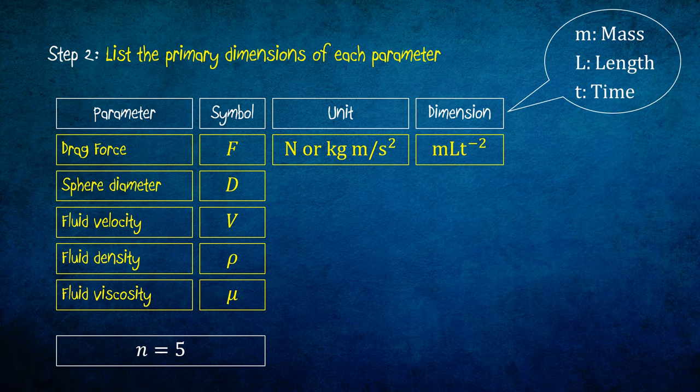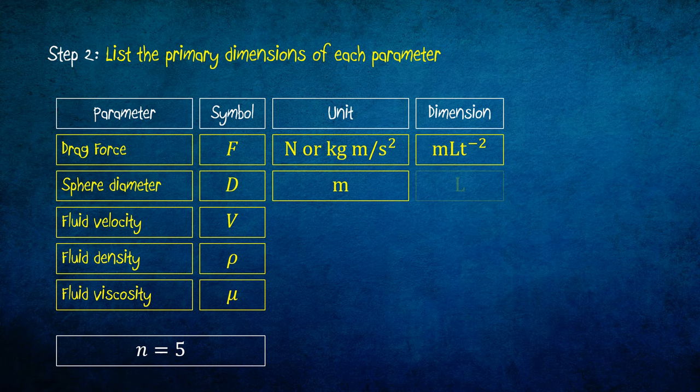The unit for diameter is meter, then its dimension is L. For fluid velocity, it is meter per second. The dimension is Lt power negative 1.